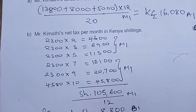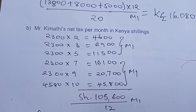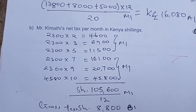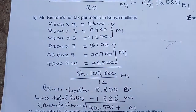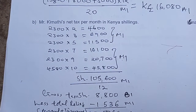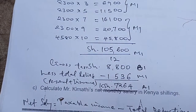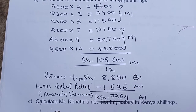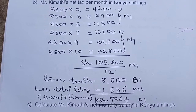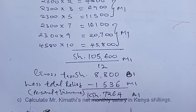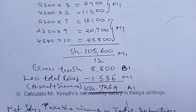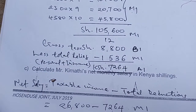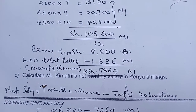Adding all the tax from each bracket gives a total annual tax of 105,600 shillings. We divide by 12 to get the gross tax per month, which is 8,800. We then subtract the total relief of 1,536 shillings, giving a net tax of 7,264 shillings per month.